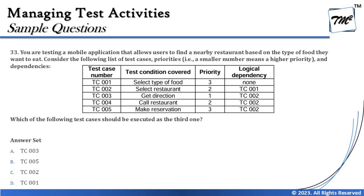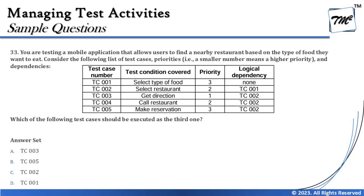On top of priority, there are logical dependencies. Test case 1 has no dependencies, but others depend on something. Test case 3 is highest priority but depends on test case 2, which in turn is medium priority and depends on test case 1. This forces us to run test case 1 first, then test case 2, then test case 3. After that, test cases 4 and 5 follow.